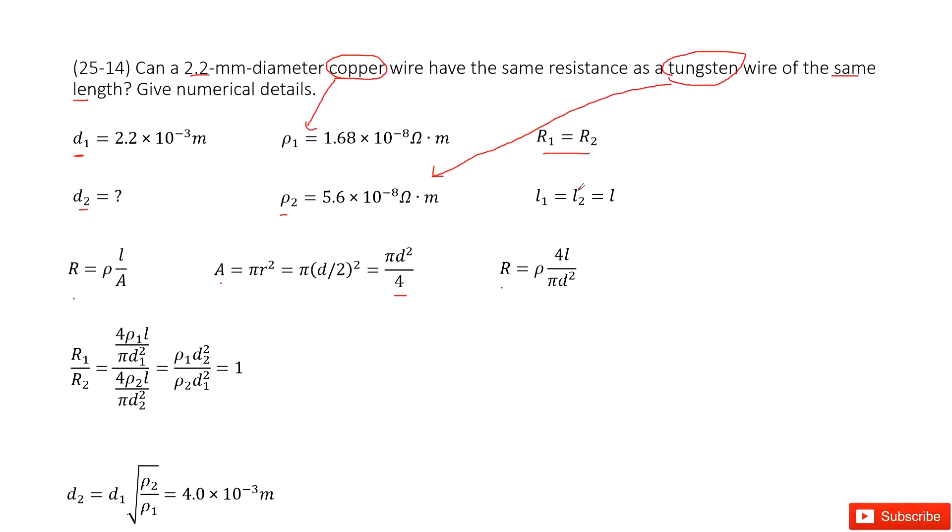It tells us the resistance R1 equal to R2. So that means the ratio for R1 with R2 equal to 1. So then we input R1 and R2 there.